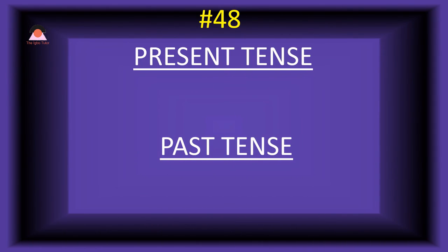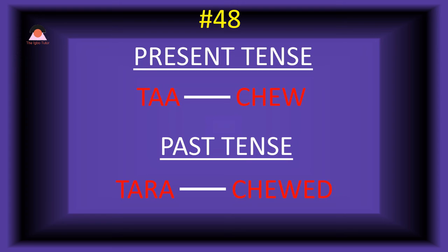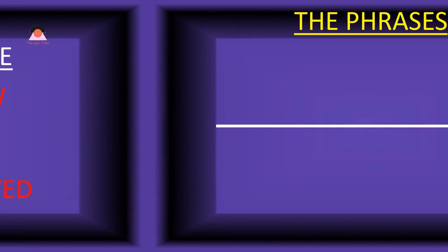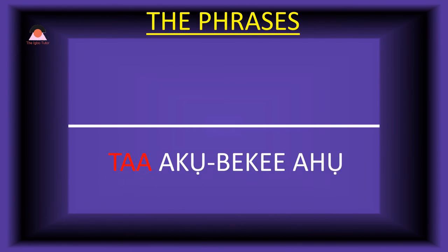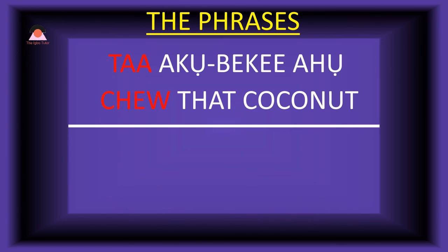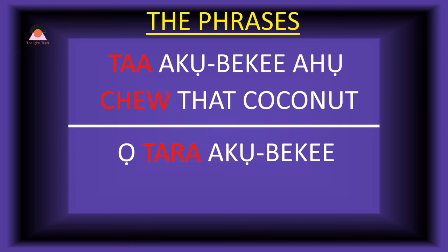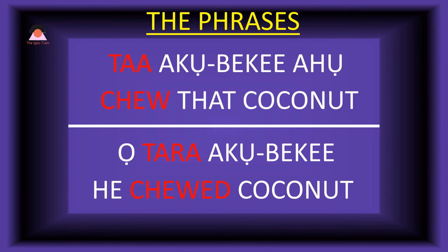Word number forty-eight: 'ta,' meaning 'crack.' The past tense of ta is 'tara,' meaning 'cracked.' Present tense phrase: 'ta akubeke' — crack that coconut. Past tense: 'o-tara akubeke' — he cracked coconut.